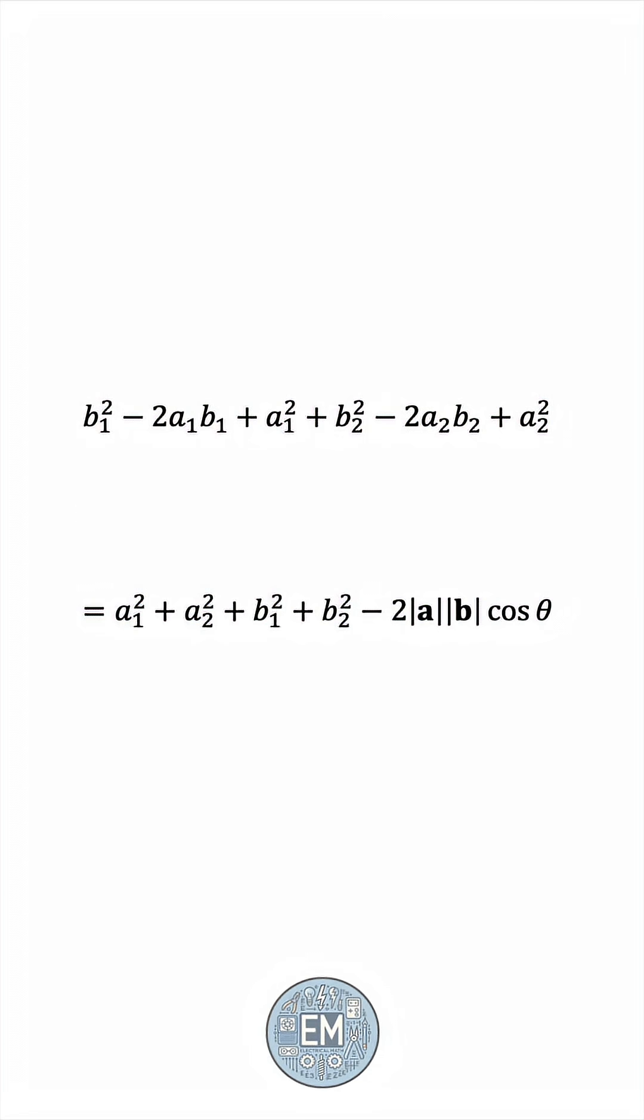b1 squared is common to both sides. a1 squared is common as well, and the same can be said about b2 squared and a2 squared. So we're only left with these terms, which all have a negative 2. So let's divide both sides by this negative 2.